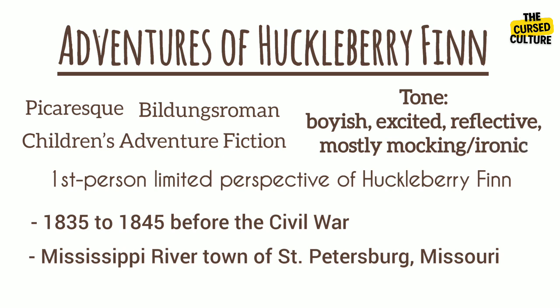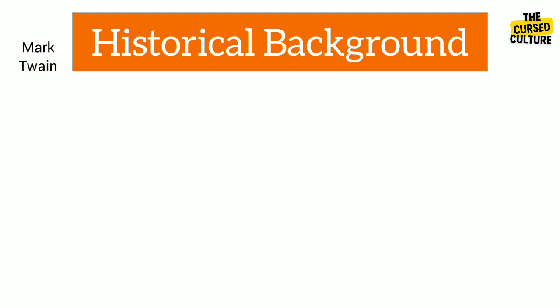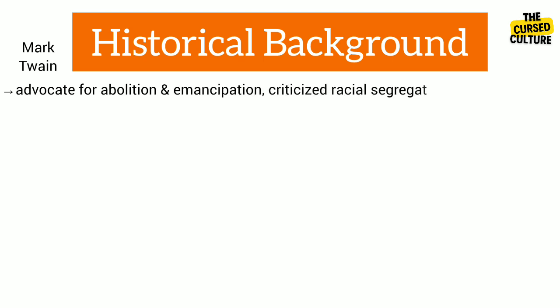Before we start with the summary, it is important to learn about the historical context of the novel to identify the themes and key ideas. Mark Twain, a steadfast advocate for abolition and emancipation, criticized racial segregation and the repression of slavery in The Adventures of Huckleberry Finn, which is a sequel to The Adventures of Tom Sawyer, first published in 1876.